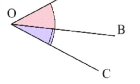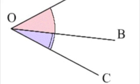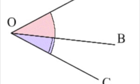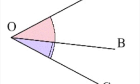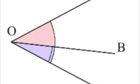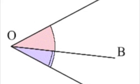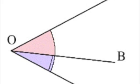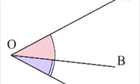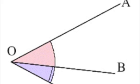Adjacent means next to or neighboring, so adjacent angles are angles just next to each other. They share a common vertex and a common side but do not overlap. The two angles shown here are adjacent.